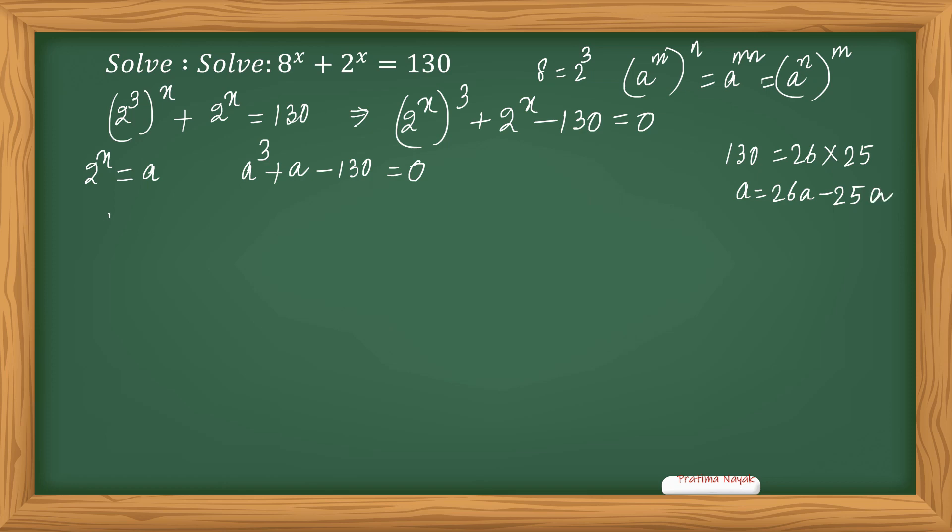So it will be a cubed minus 25a plus 26a minus 130 equals 0. From the first two terms I take a common, so it will be a times (a squared minus 25) plus 26 times (a minus 5) equals 0.